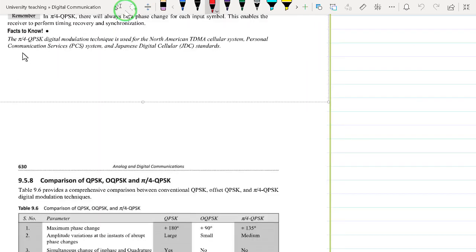One of the facts to know is that π/4 QPSK is a very important digital modulation scheme that is used by North American TDMA cellular systems, PCS as we have seen in wireless communication, and the Japan Digital Cellular Standards. They use this because of the advantages of a reduced number of phase shift transitions, and that is very important.